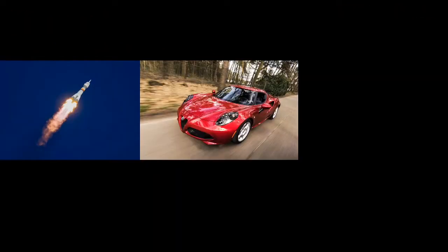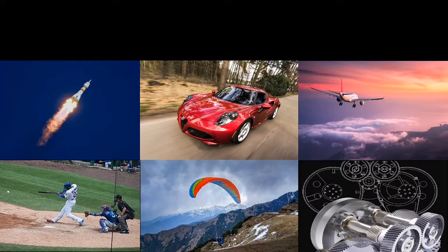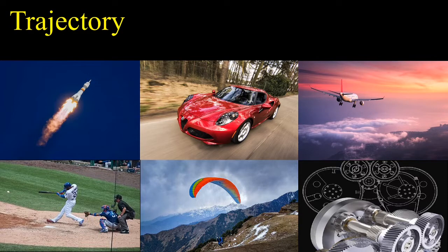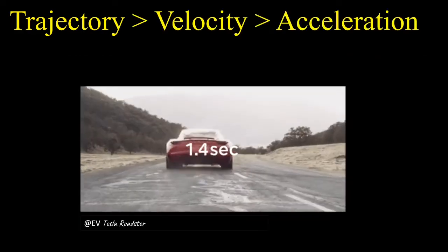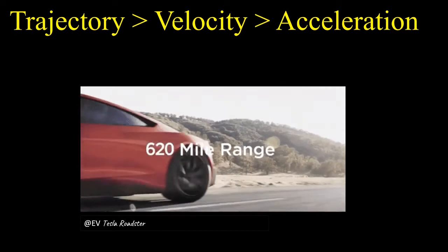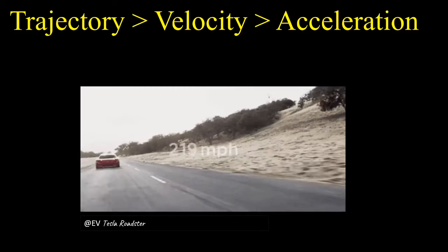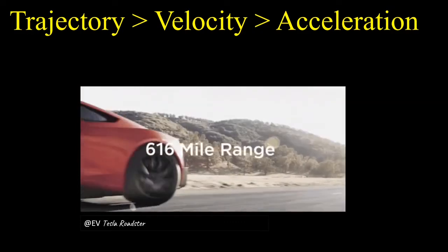Think of a flying rocket, a flying satellite, a moving car, an airplane, a baseball, or any mechanism — situations where you want to understand the position followed by an object at every instant of time. We call this a trajectory. In many situations, the desired trajectory is already set and you want to understand how fast an object has to travel to achieve that trajectory.